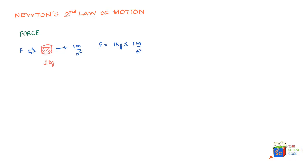The key point here is that force is causing the acceleration. Very often students mistake that if there is acceleration, then the acceleration is causing the force. To be clear: for acceleration to happen in an object, there has to be a force acting on the object.